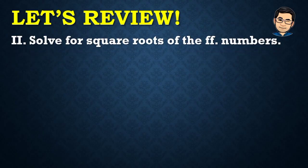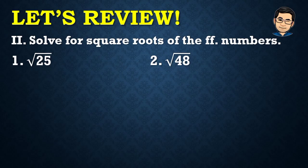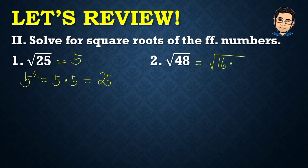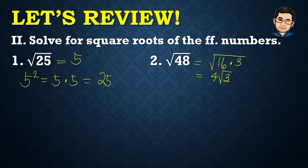For our next review, we solve the square roots of the following numbers. Number one: square root of 25. Think of a number that when squared gives 25 — that is 5. Check: 5 squared equals 5 times 5 equals 25. Next, square root of 48: 48 is not a perfect square, but it has a perfect square factor of 16. So we write it as square root of 16 times 3. 48 divided by 16 is 3, and square root of 16 is 4, so the answer is 4 square root of 3.